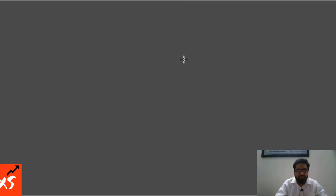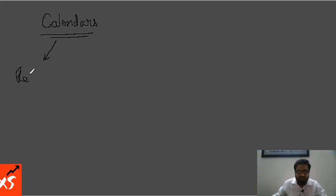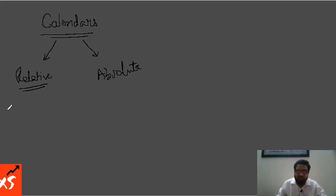Welcome to this video on calendars. There are two types of questions: one is with a relative reference, where you are given a day for a particular date and asked what day it will be 20 or 30 years later or a few months later. The second type is an absolute question, where you are asked to find the day for any particular date. We'll start with relative questions first.